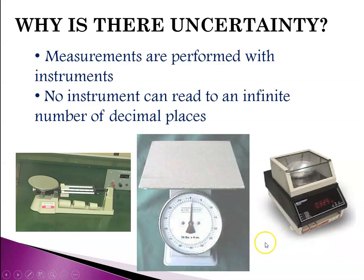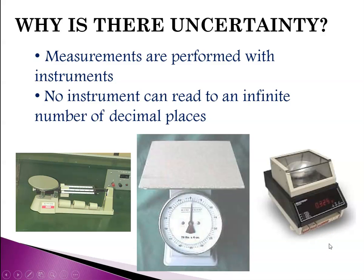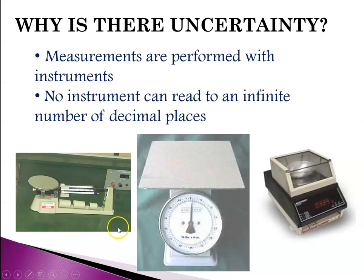If I'm measuring how many pounds of apples I'm buying at the store, the one in the center is probably good enough. If I'm measuring how many grams of salt I'm going to put into a reaction, the triple beam balance is probably good. But if my doctor is making serums for my allergy shots, I'm hoping he's using the analytical balance and measuring mass to the ten-thousandths place — because if he puts the wrong amount in me, I might get really sick. There's uncertainty because instruments are not all the same.